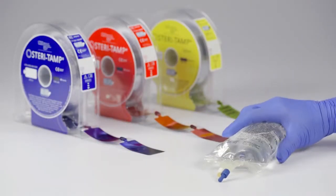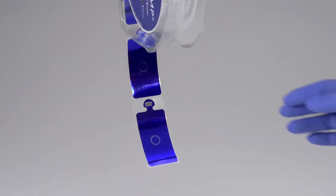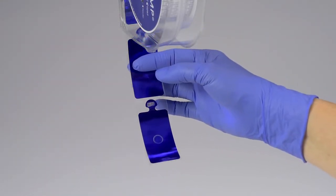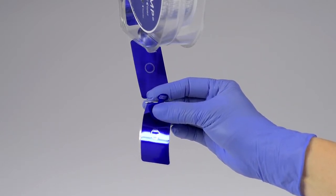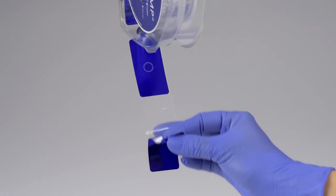Applying SteriTAMP to IV Bag Ports is easy. Supporting the underside of the liner, grip the tab with your thumb and index finger, where the tab meets the base of the seal, then roll the SteriTAMP off the liner.